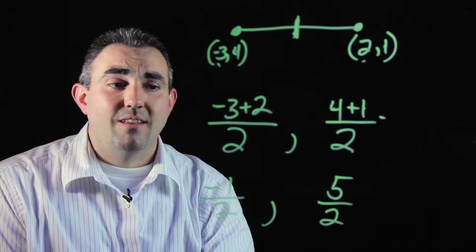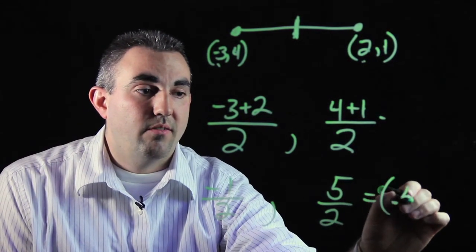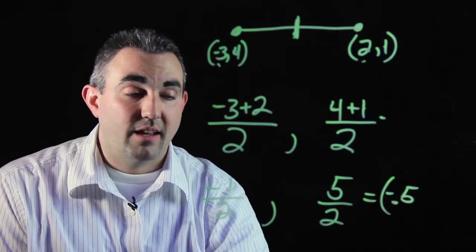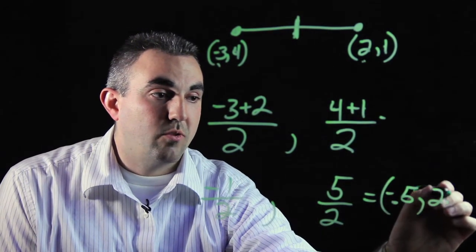You could also write this in decimal form, which would be negative .5, because it's negative 1 half, comma, and 2.5.